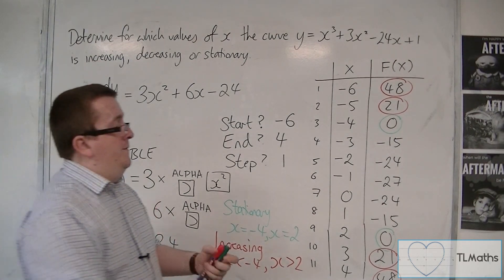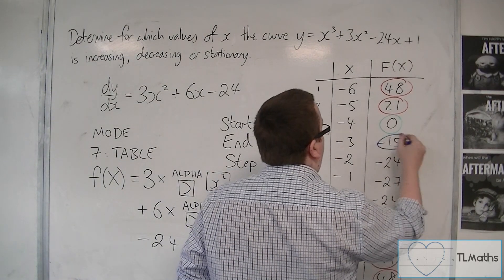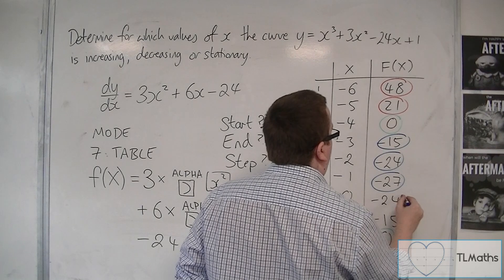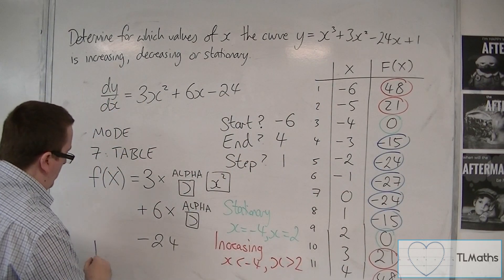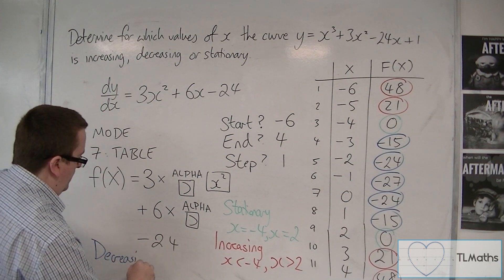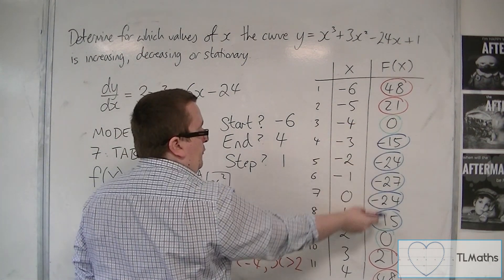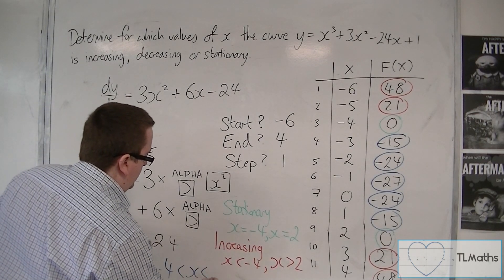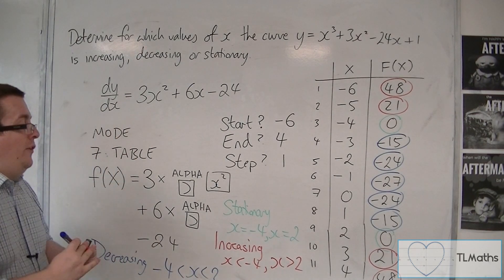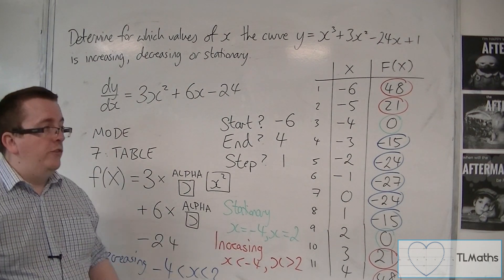And lastly, this must be where it is decreasing, because all of these gradients are negative. And so the curve is decreasing between minus 4 and 2. So minus 4 is less than x is less than 2. These are exactly the same results as we got in the previous video.